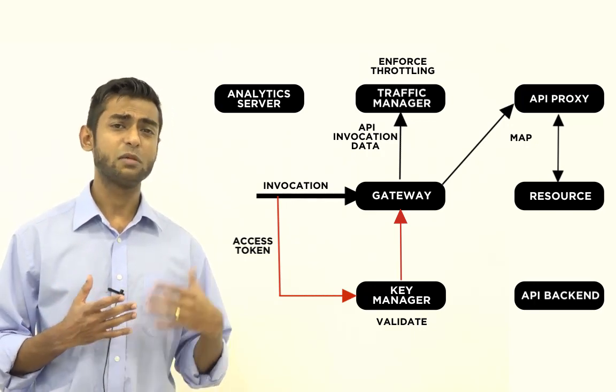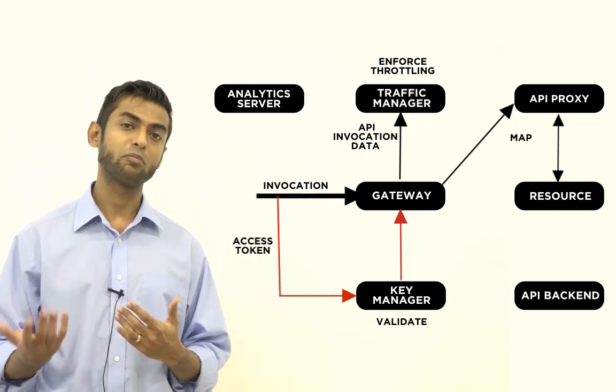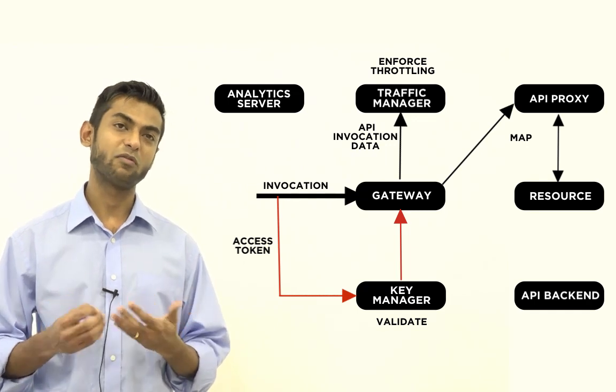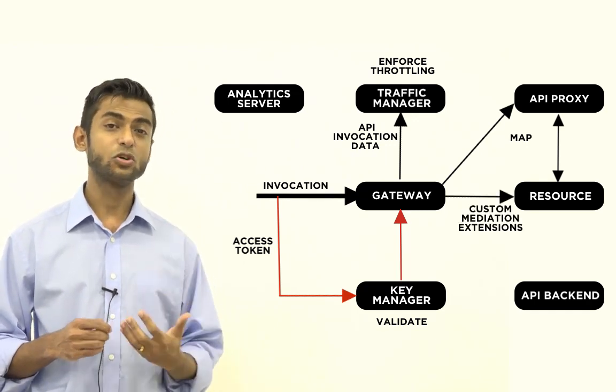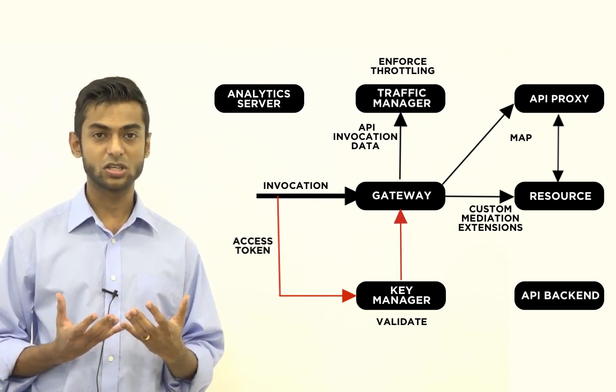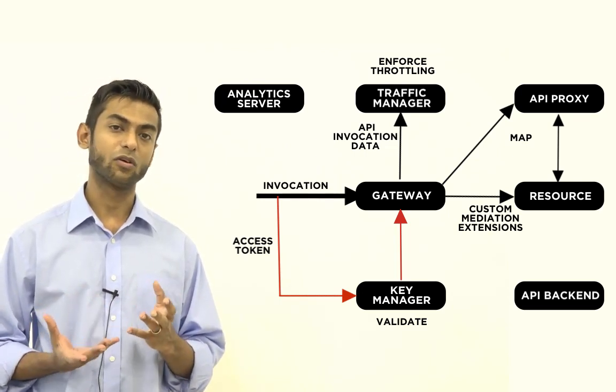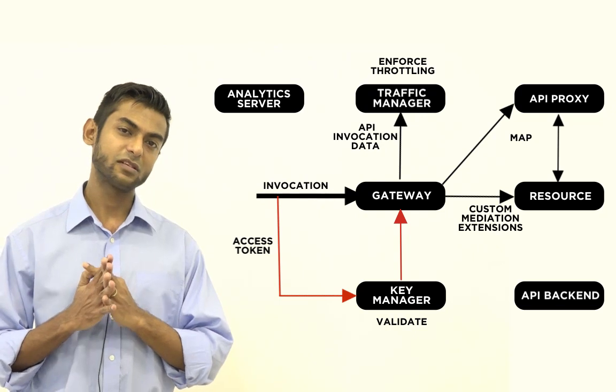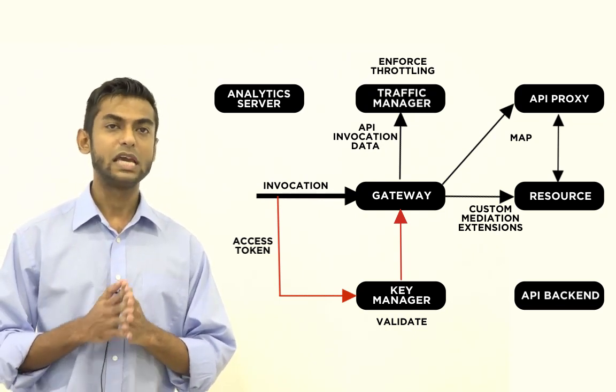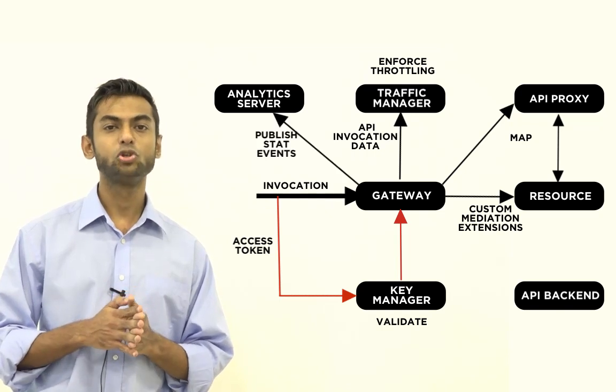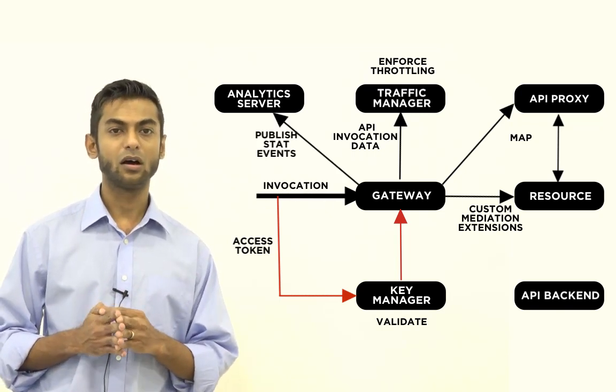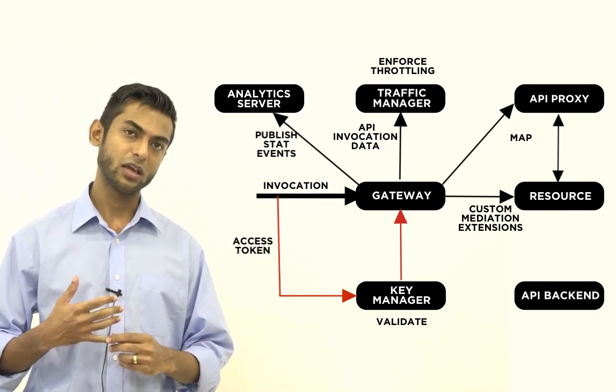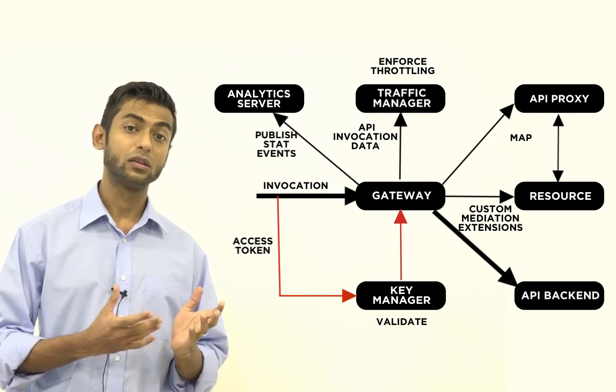So given that the API call does not trip the throttling policy, the next step that the API Gateway will perform is it will execute any custom mediation extensions that have been configured for that given API proxy. And then if API statistics have been enabled, the API Gateway will publish stats events to the analytics server for later analysis. And finally then the actual invocation call will be forwarded to the API backend.